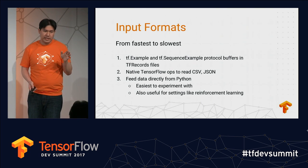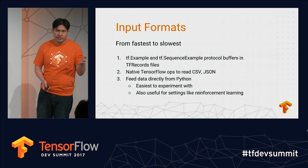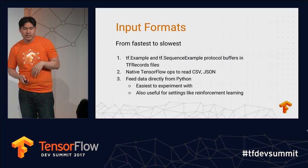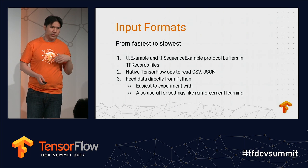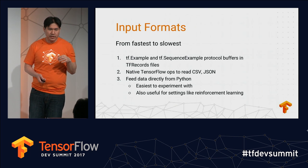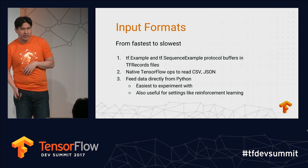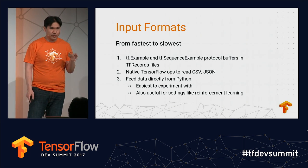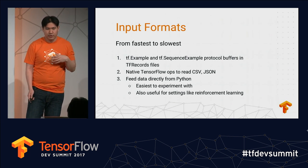We have specifically optimized the path for working with TFExample and TFSequenceExample protocol buffers. Sequence Example is typically used when you're training with RNNs. TF records is a TensorFlow-specific file format and this is by far the fastest. We use this internally and we've optimized this path pretty well.